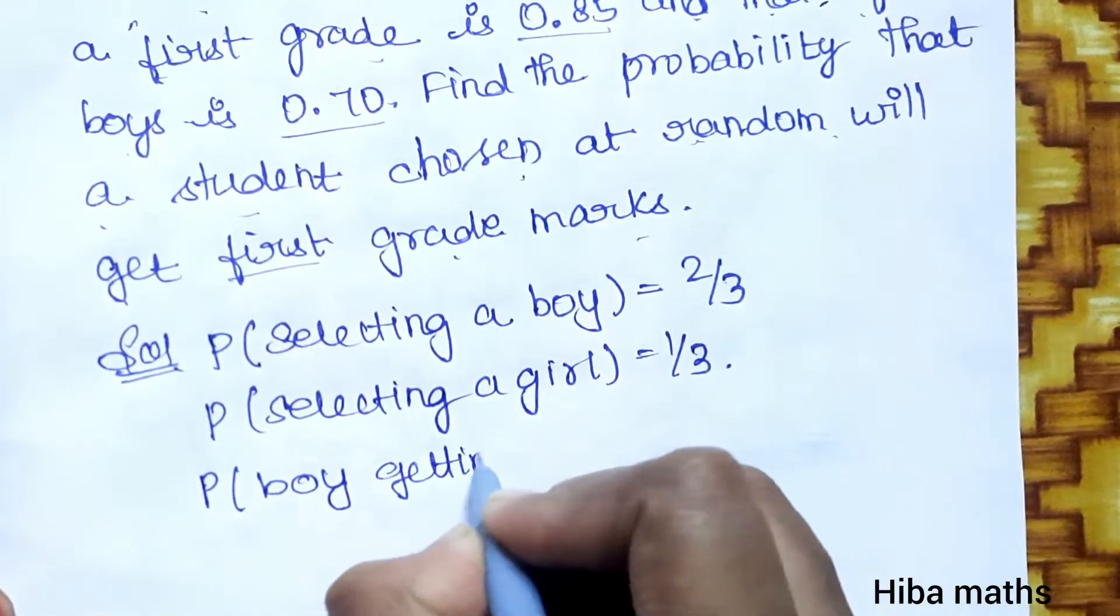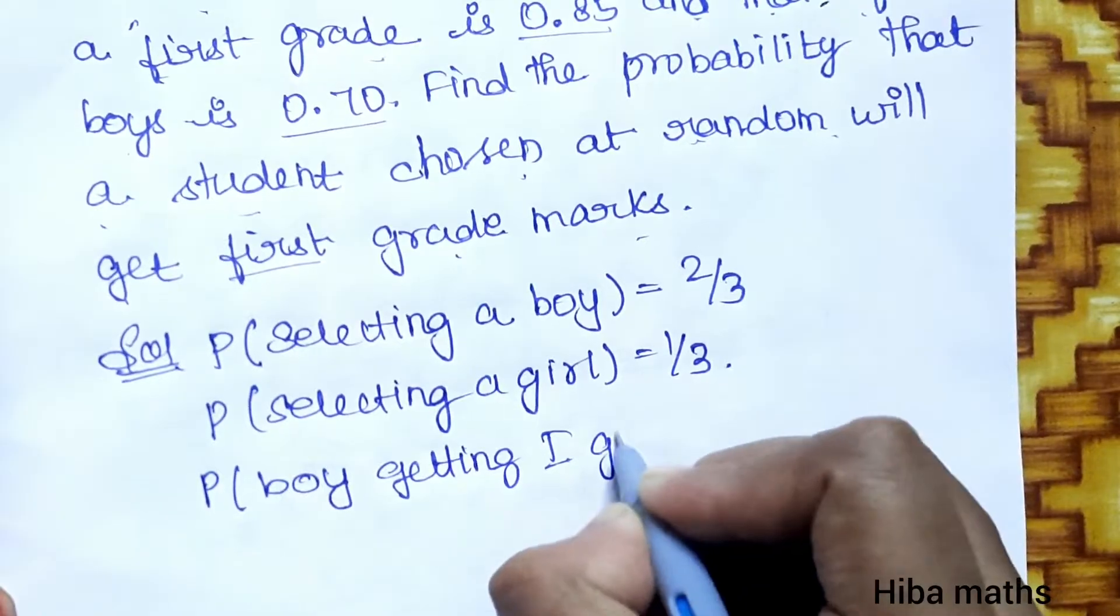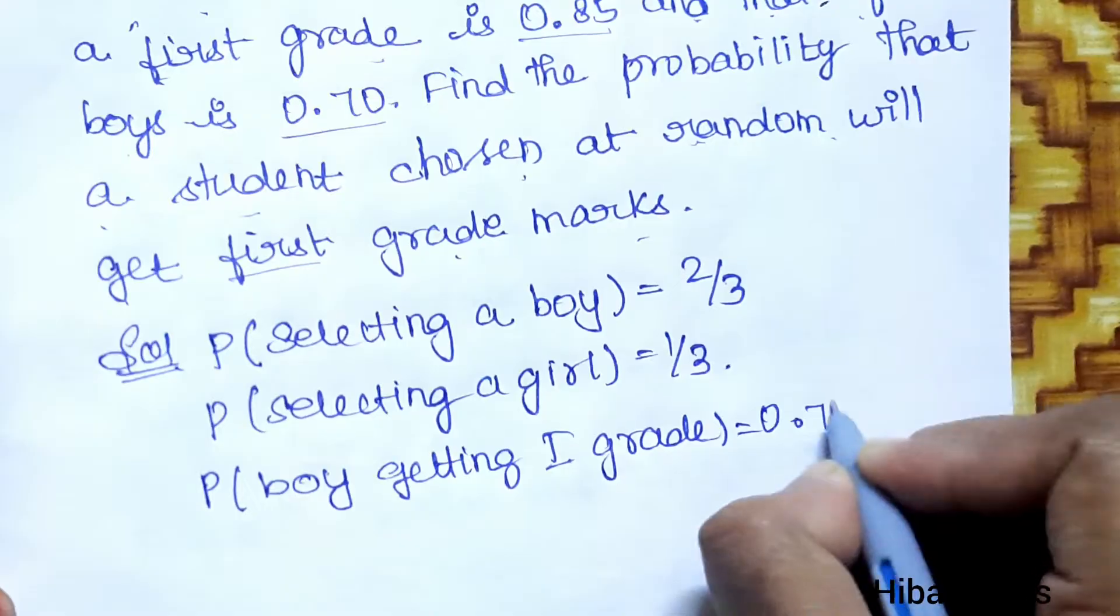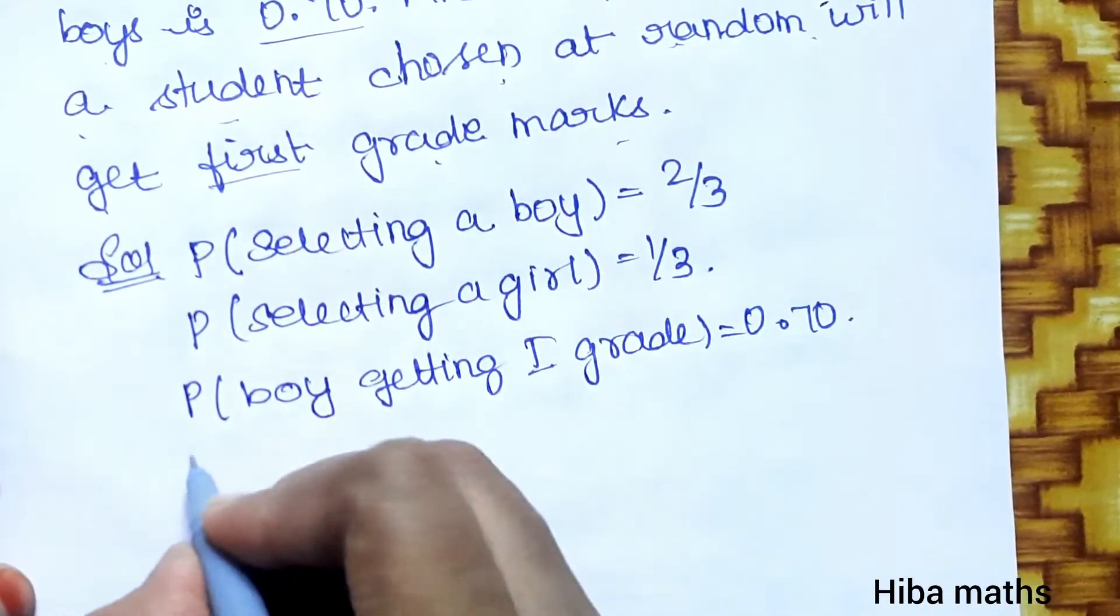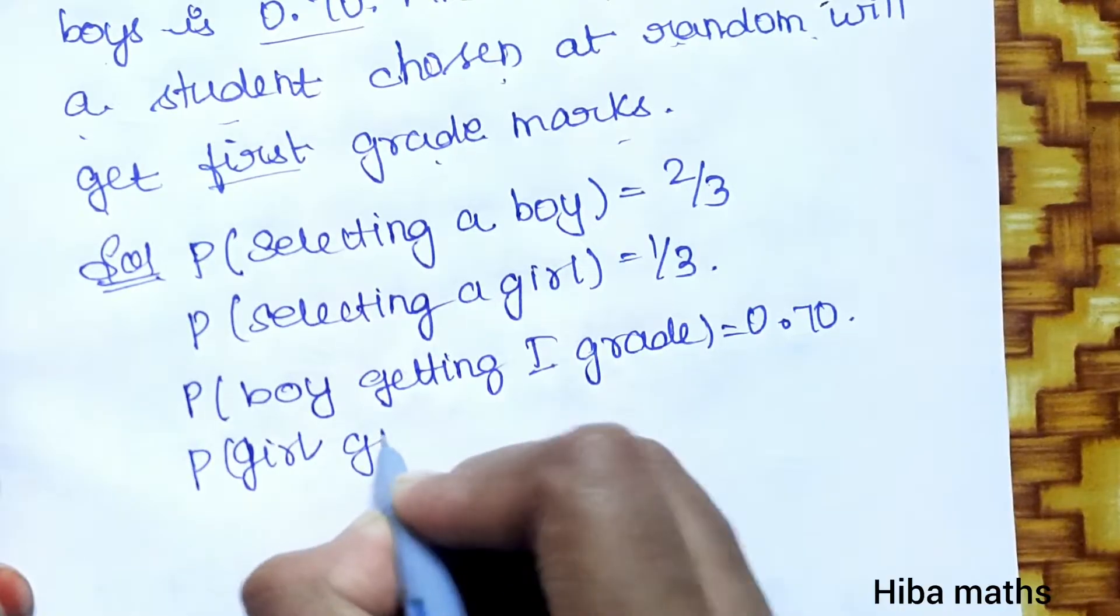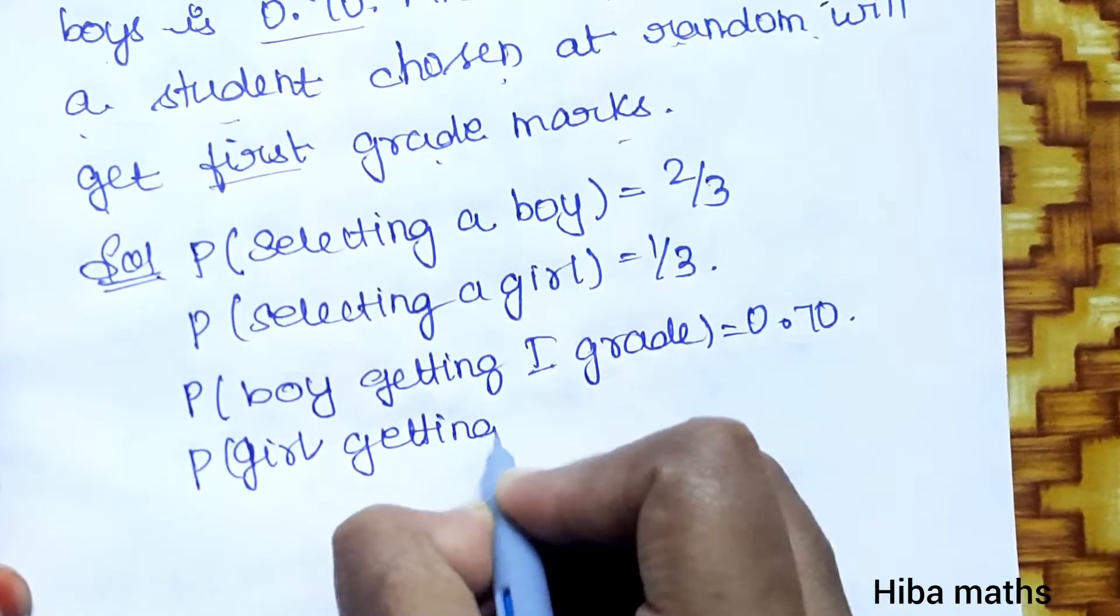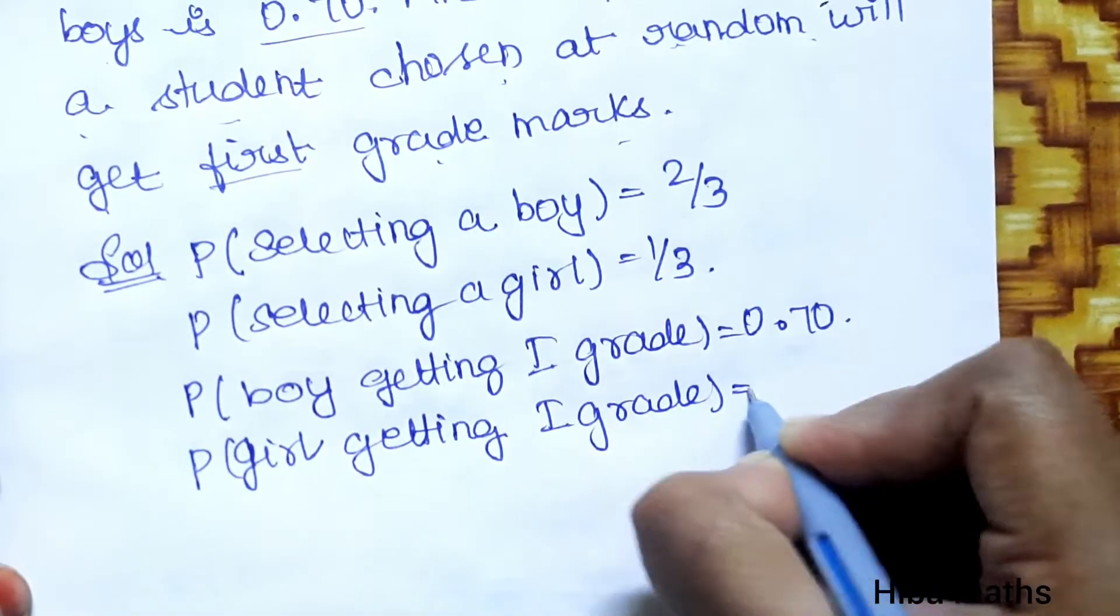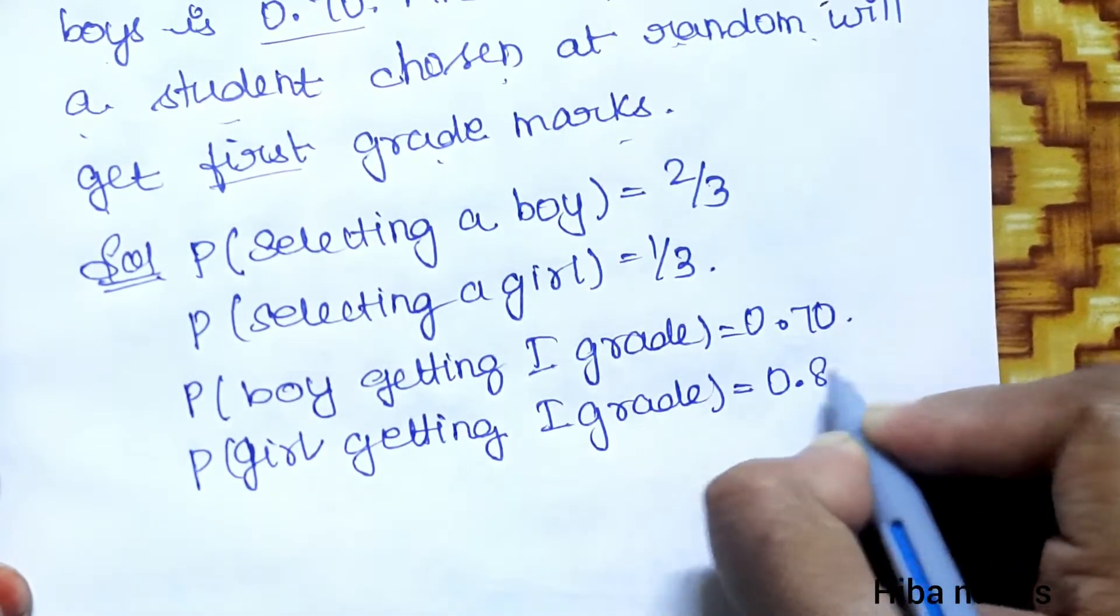Probability of boy getting first grade equals 0.70. Probability of girl getting first grade equals 0.85.